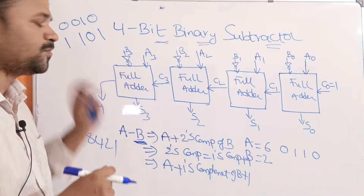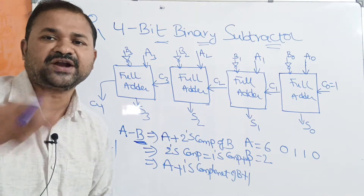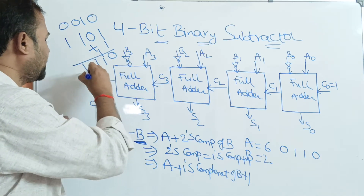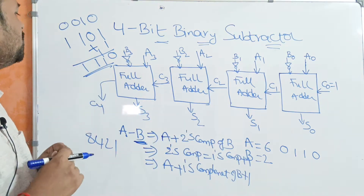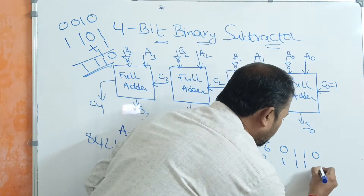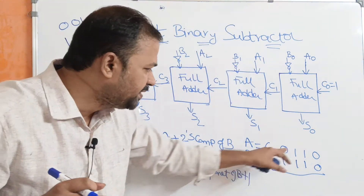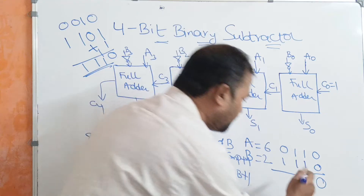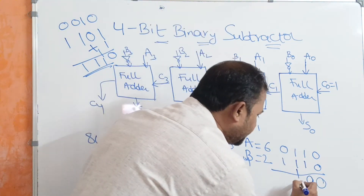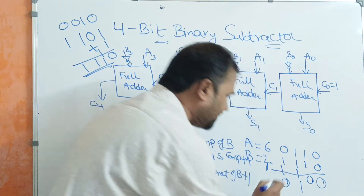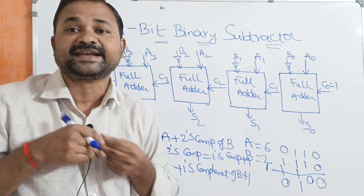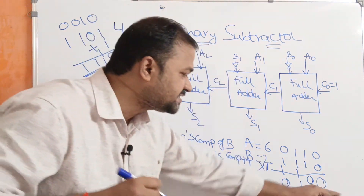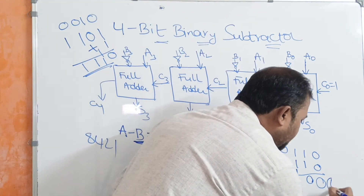Here we have to calculate the 2's complement. For the 2's complement, we have to add 1 to the 1's complement. So adding 1 to 1101: 1 plus 1 gives 0 with carry 1; 0 plus 1 gives 1; then 1; then 1 — giving 1110 as the 2's complement of 2. Now we add the 2's complement of B to A: 0110 plus 1110. We perform the addition: 0 plus 0 is 0; 1 plus 1 is 0 with carry 1; 1 plus 1 plus carry 1 gives 1 with carry 1; resulting in 0100. If we get a carry out, it specifies a positive number, so we neglect that carry. The result 0100 in decimal notation is 4. So 6 minus 2 is 4.